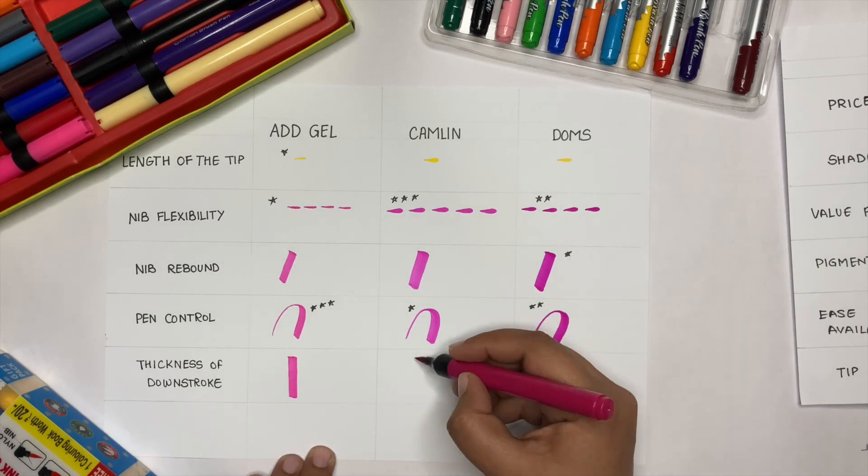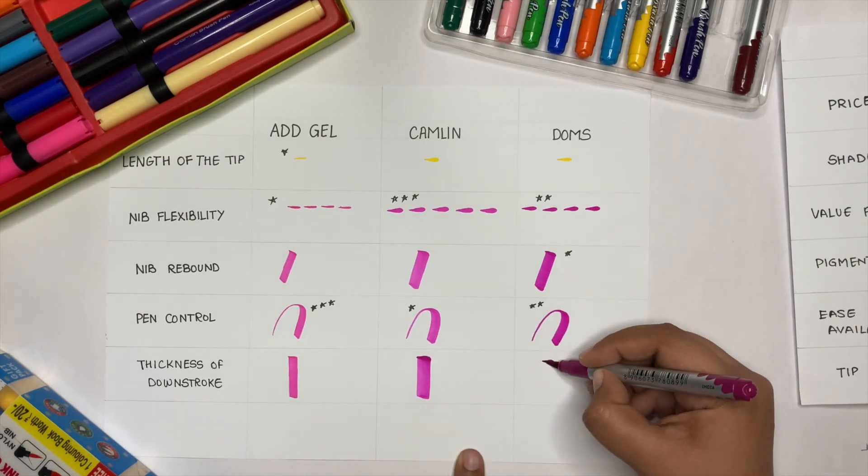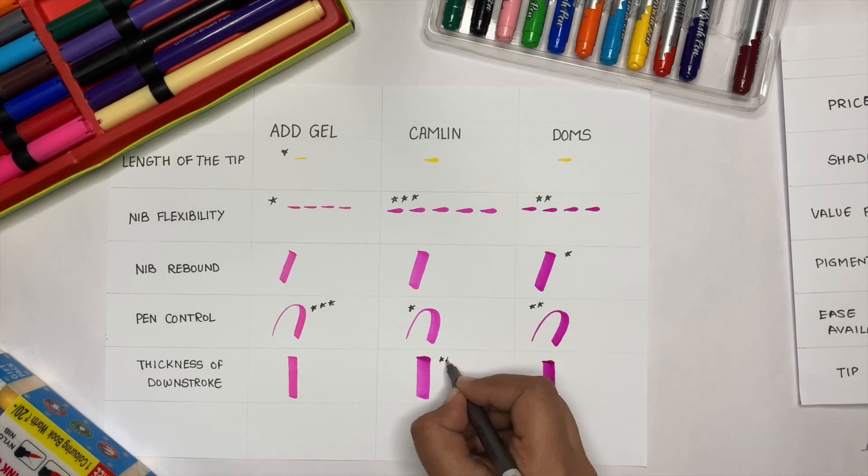Let's see the thickness of the downstrokes. Camlin and DOMS have similar thickness while ADD Gel is less thick than these two.